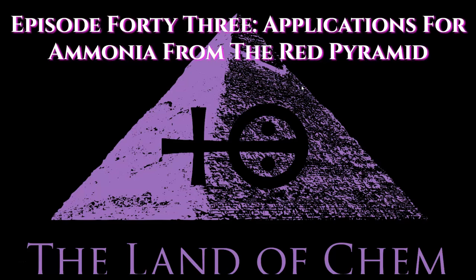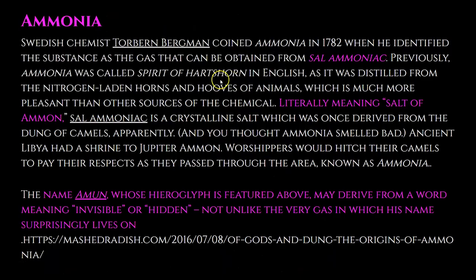Recall from our previous discussions that the knowledge of ammonia, the production of ammonia, and the name of this chemical have their origins in ancient Egypt, even according to conventional history. The original name for ammonia was sal ammoniac, which literally translates into the salt of Ammon — Ammon being an Egyptian deity. The archaeological record shows that they were indeed producing this chemical, and the applications for this chemical would have been very much the same back then as they are today in our modern world.